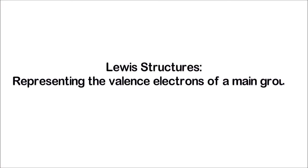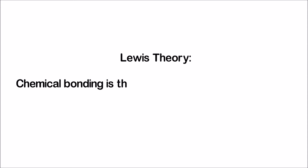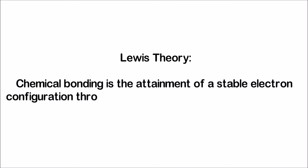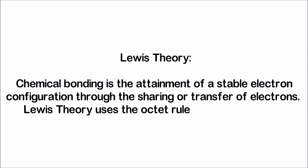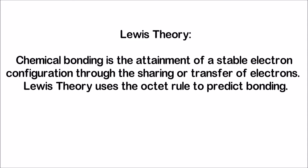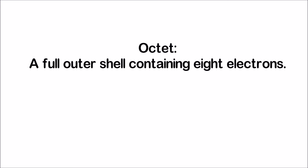We use Lewis structures to represent the valence electrons of a main group element using dots surrounding the chemical symbol. Lewis theory is the idea that chemical bonding is simply the attainment of a stable electron configuration through the sharing or transfer of electrons between bonded atoms. Lewis theory uses the octet rule to predict bonding. An octet is a full outer shell containing eight electrons. Lewis structures demonstrate bonding in molecules by showing atoms sharing electrons to attain a full octet.